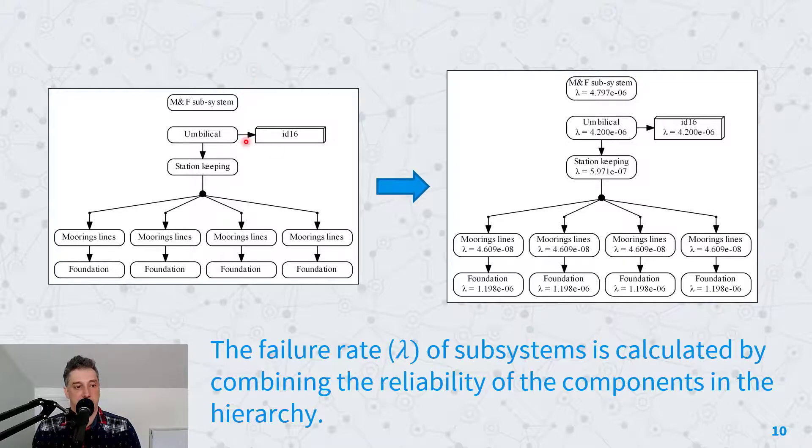If we take a look here on the left hand side, we've got the moorings and foundations subsystem. That's made up of these smaller subsystems like the umbilical, and that umbilical is made up of one component. These components are represented by square boxes, ID16. There would be a number of other components in this design, in this network, but they're just not shown here otherwise the diagram would be too complicated.